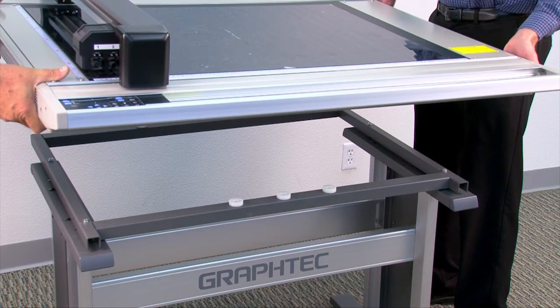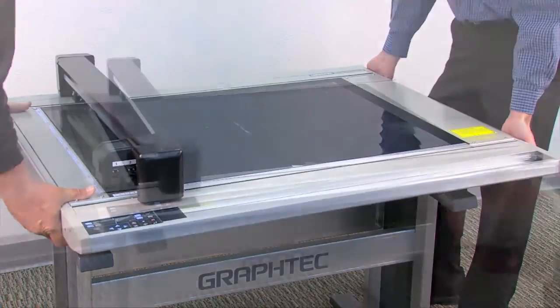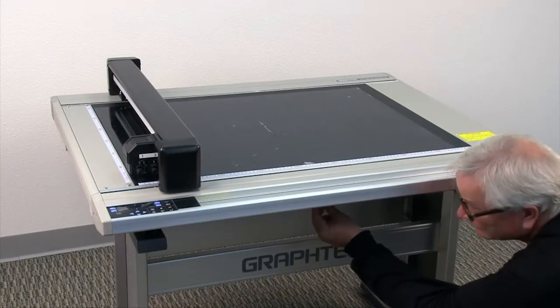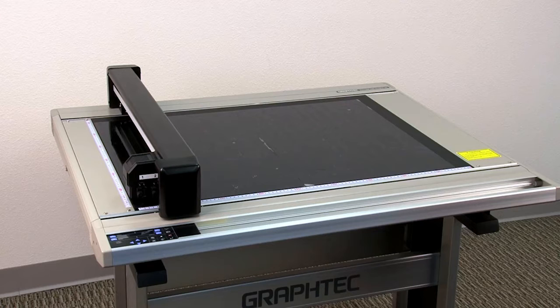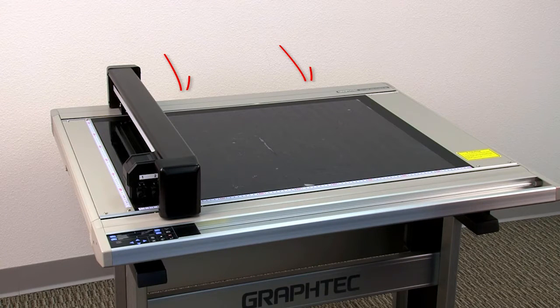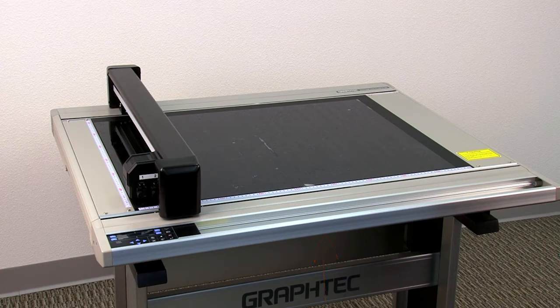Once the bracket has been mounted, with the assistance of another person, take the unit out of the box and place it on the mounted bracket. Look underneath the table, aligning the holes on the brackets to the cutter. Once aligned, take the white thumb screws and mount them in three places, two in back and one in front, and then hand tighten the screws.